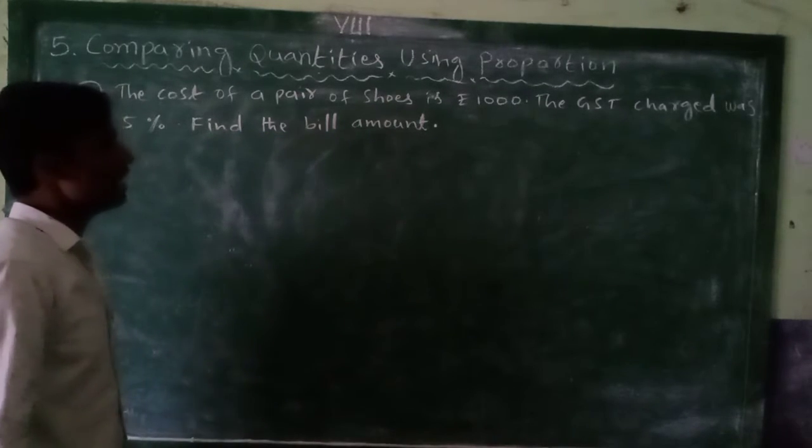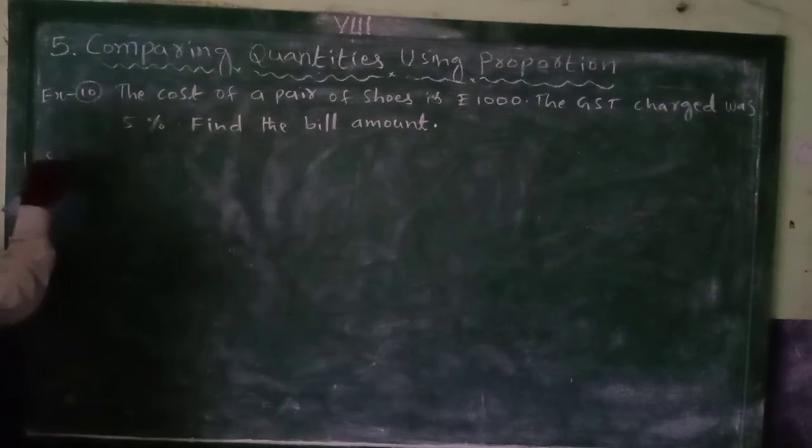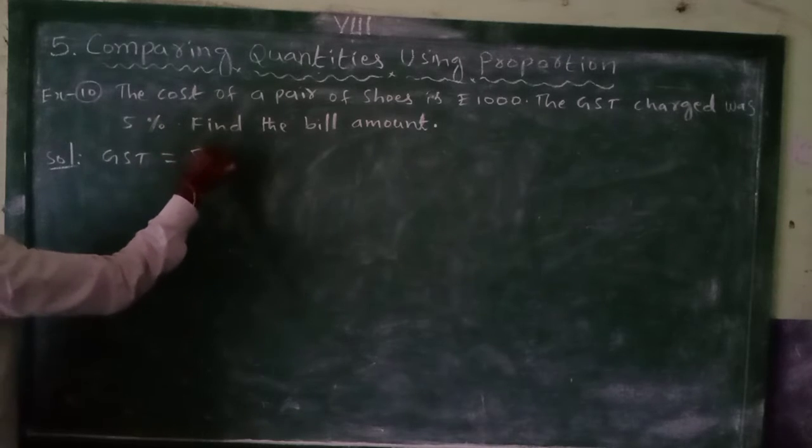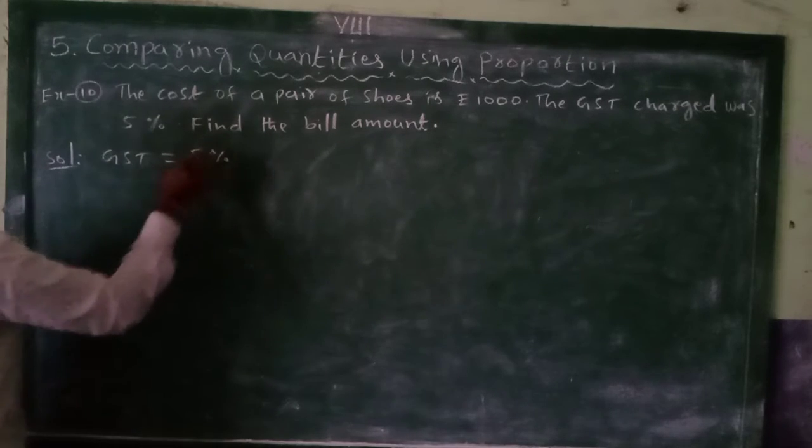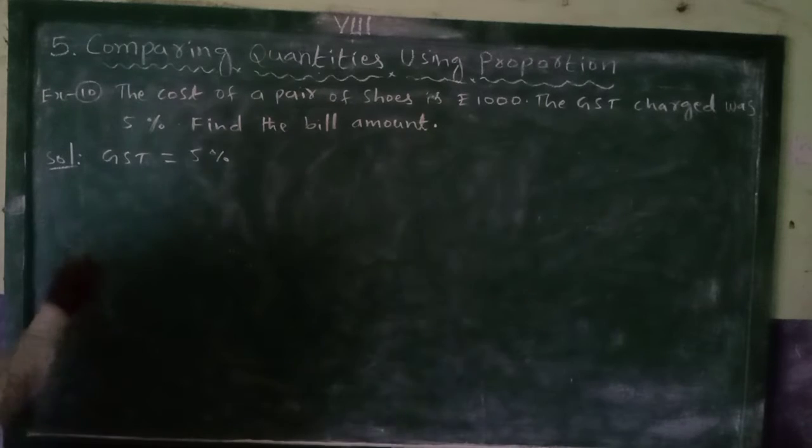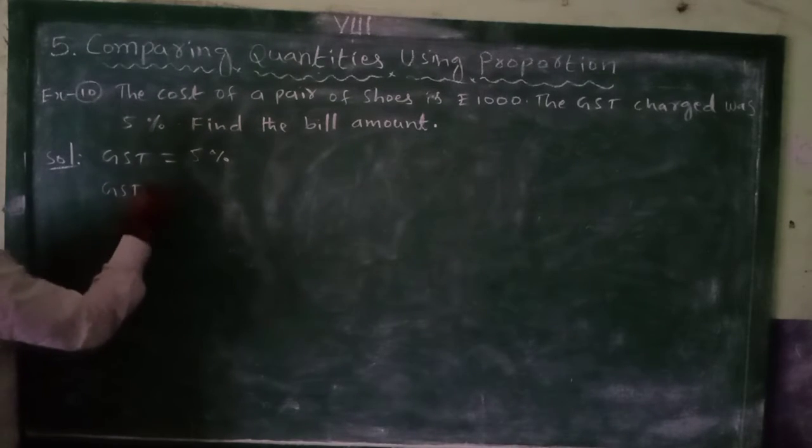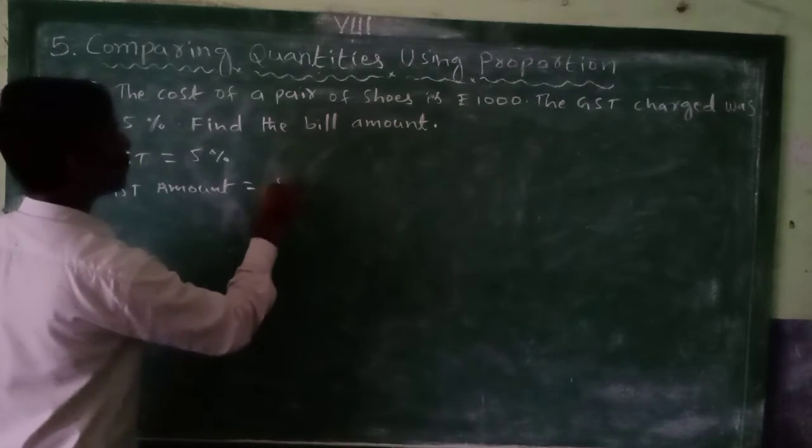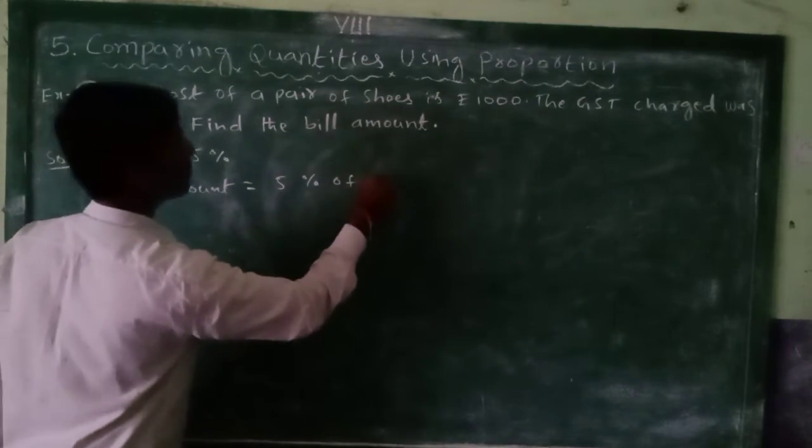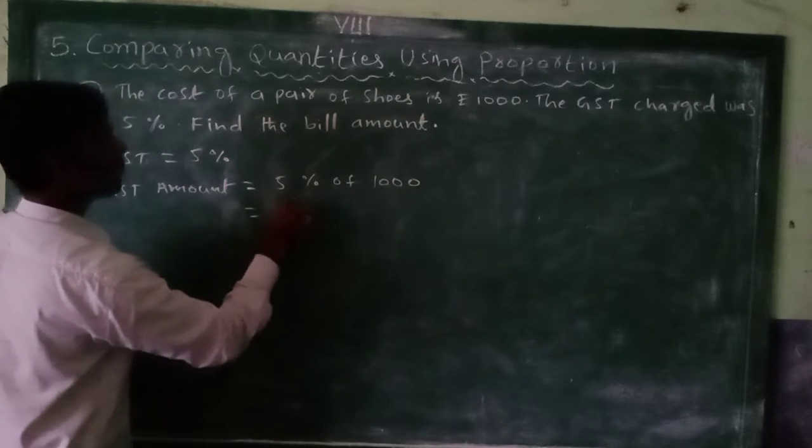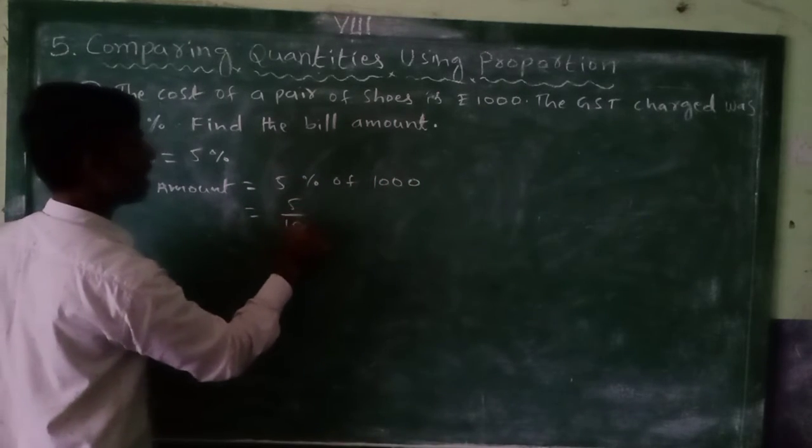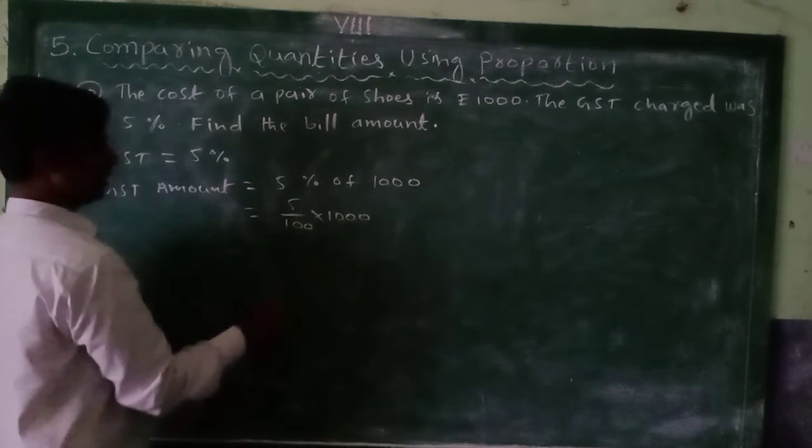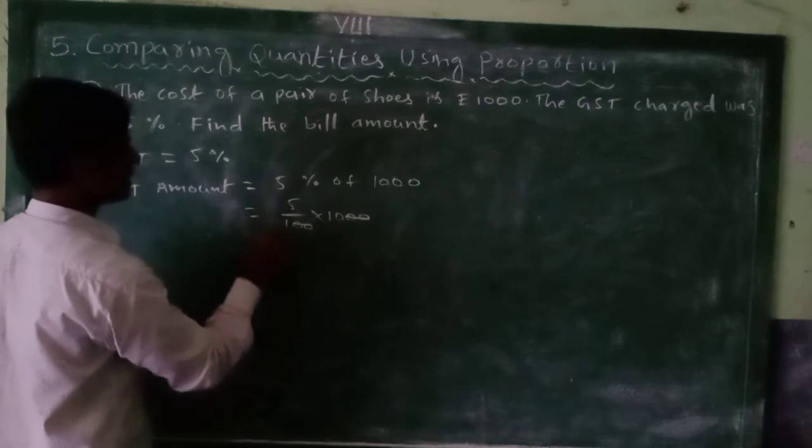So we have the solution here. GST percent is equal to how much? 5% is there. So now we have to find the GST amount. GST amount equals 5% of 1000. So 5%, remove percentage you write as 5/100, then multiply by 1000. Now 2 zeros, 2 zeros we can cancel now.